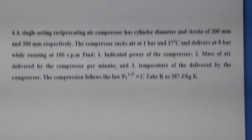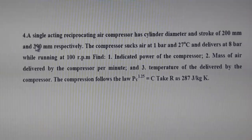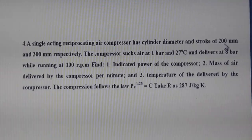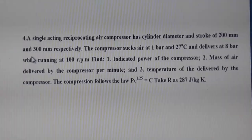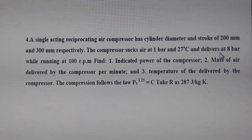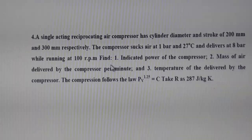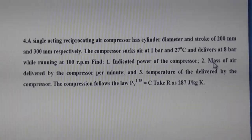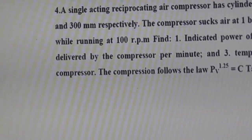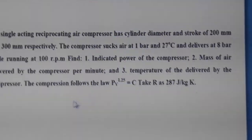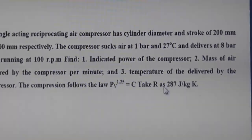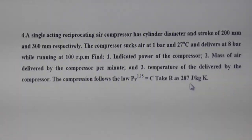This is the statement of the second numerical. A single-stage reciprocating air compressor has a cylinder diameter and stroke of 200 mm and 300 mm respectively. The compressor takes air at 1 bar and 27°C and delivers at 8 bar while running at 100 rpm. Find: first, the indicated power; second, the mass of air delivered per minute; third, the temperature of air delivered. Compression follows the law pv^1.25 = C. Take characteristic gas constant R = 287 J/kg·K.